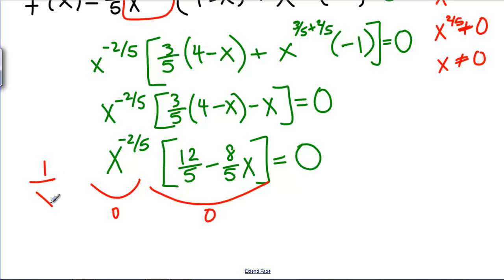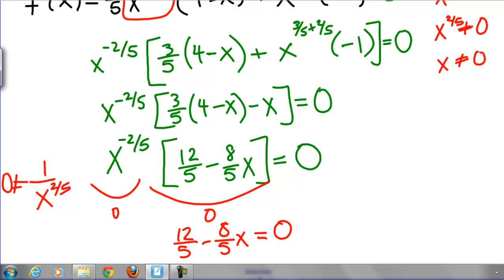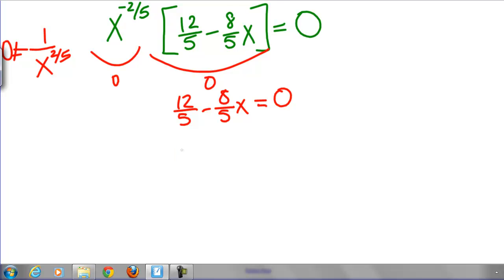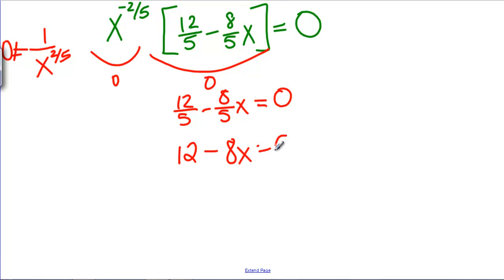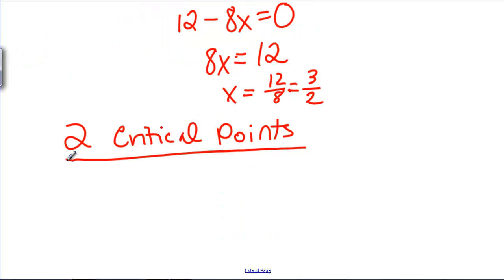But X to the negative 2 fifths is 1 over X to the 2 fifths which can't equal 0 because the top is always 1. In fact a fraction can only equal 0 when its top equals 0. So that leaves us with 12 fifths minus 8 fifths X equals 0. Multiplying by 5 we have 12 minus 8 X equals 0 or 8 X equals 12 or X equals 12 eighths which is the same as 3 halves. So we have two critical points and they occur at X equals 0. That was where the derivative did not exist and X equals 3 halves.